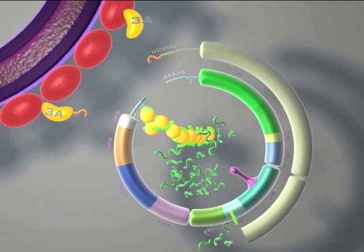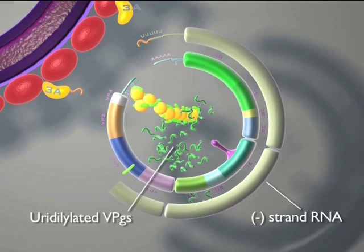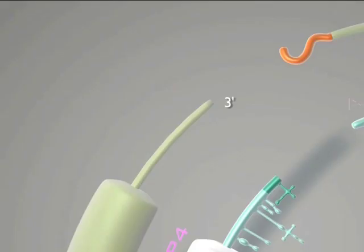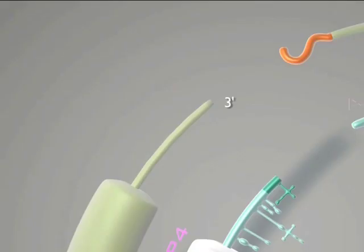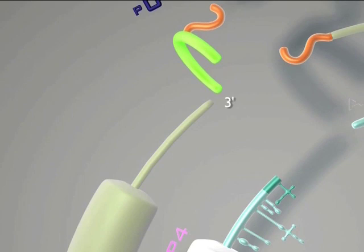When the polymerase completes the minus strand and there is a big enough reservoir of uridylylated VPGs, positive strand RNA synthesis can begin. Each complex of uridylylated VPG and 3D pole is translocated to the 3' end of the minus genome.